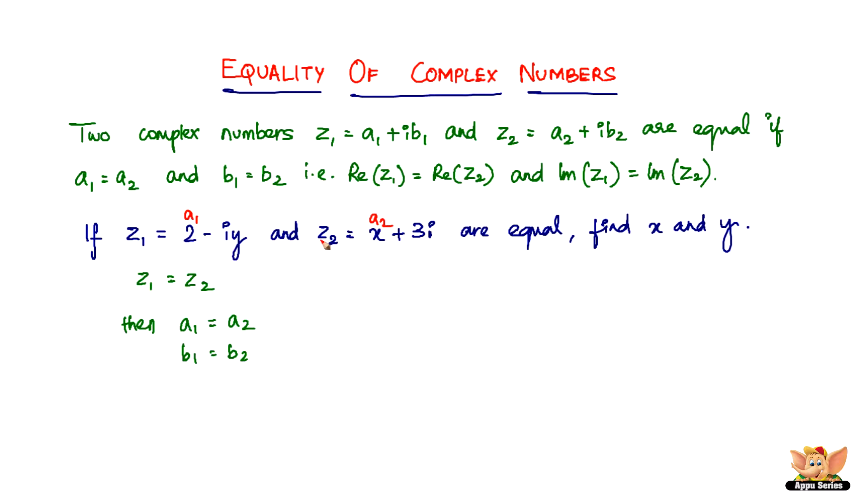And y should be equal to 3. Well, not exactly 3, because there is a negative sign here. You can't just take y = 3. You have to take -y = 3.